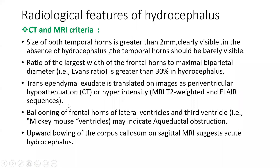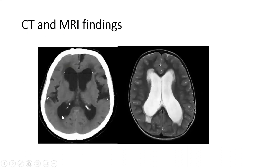On CT and MRI, the size of both temporal horns greater than 2 mm is clearly visible. In the absence of hydrocephalus the temporal horn should be barely visible. The ratio of the largest width of frontal horns to maximum biparietal diameter — called the Evans ratio — is greater than 30% in hydrocephalus. There is transependymal exudate, seen as periventricular hypoattenuation on CT or hyperintensity on MRI T2 and FLAIR sequences. Ballooning of the frontal horns and third ventricle, called Mickey Mouse ventricles, may indicate aqueductal obstruction. Upward bowing of the corpus callosum on sagittal MRI suggests acute hydrocephalus.